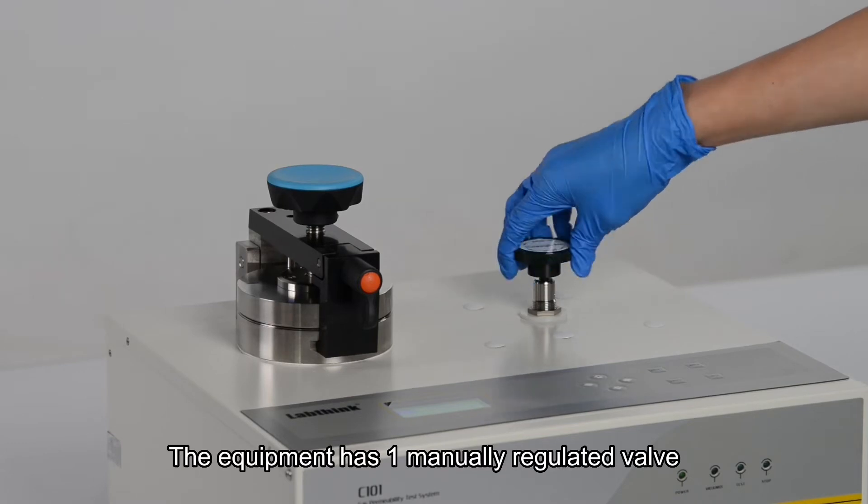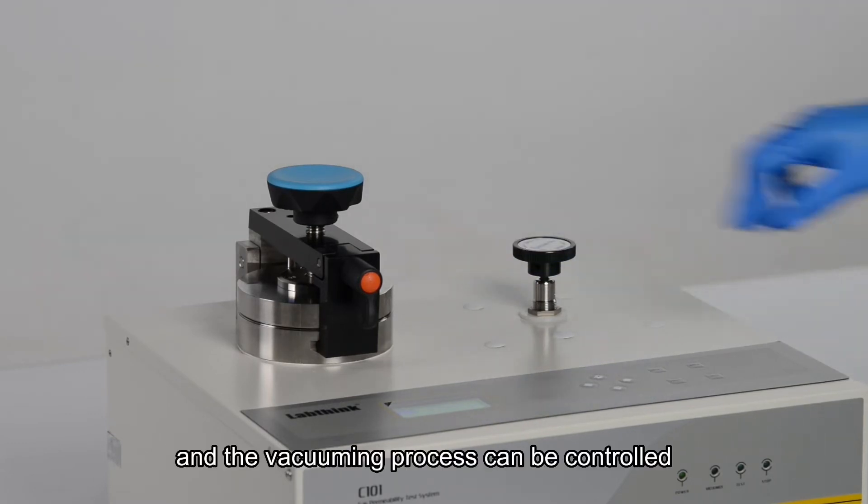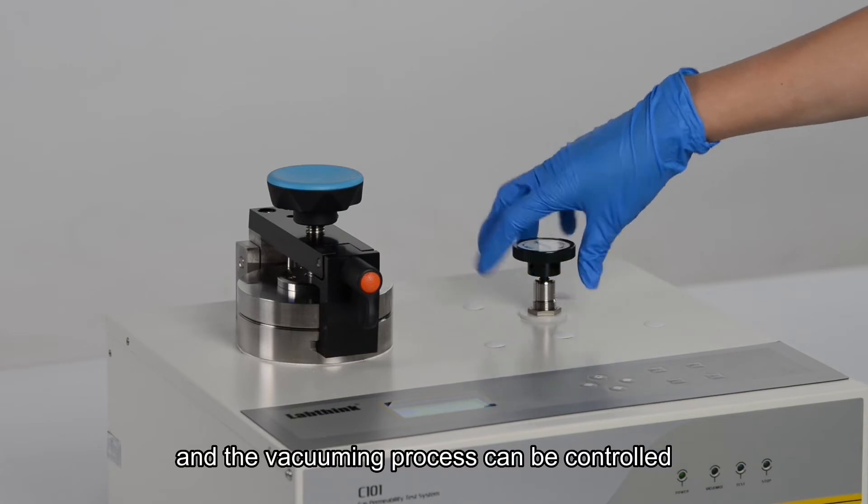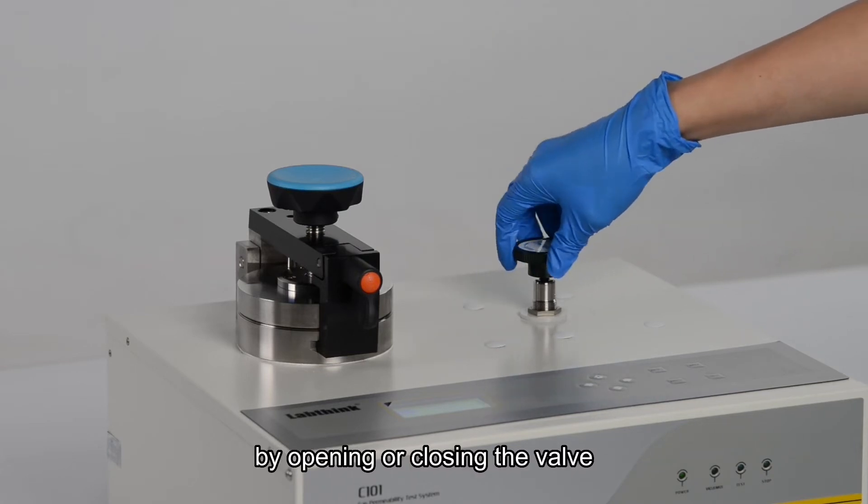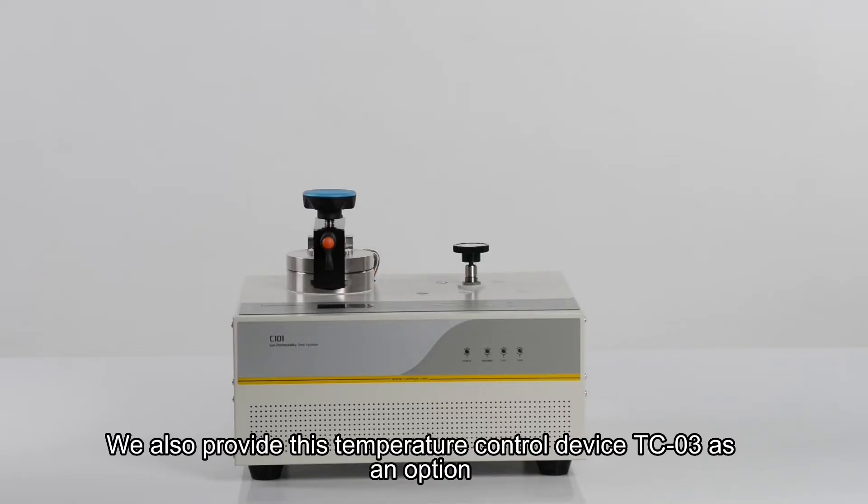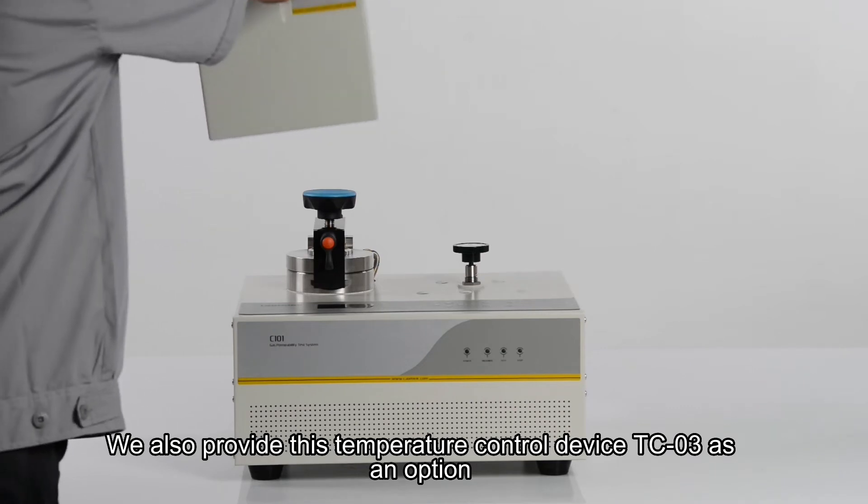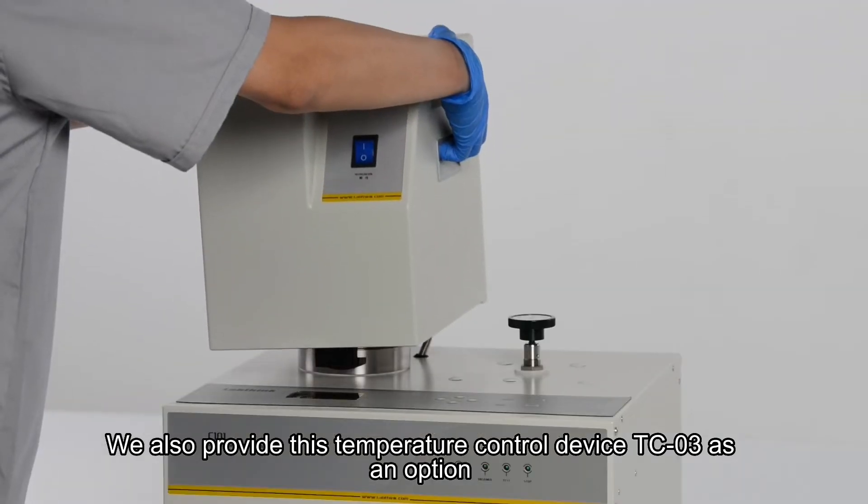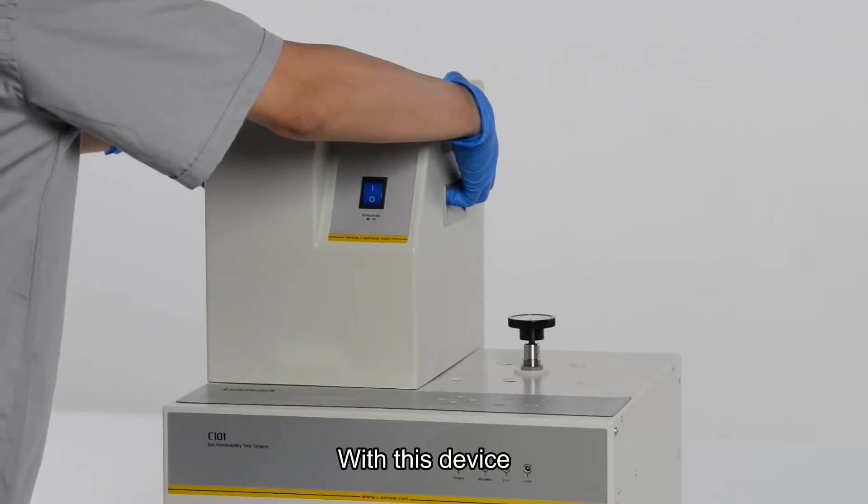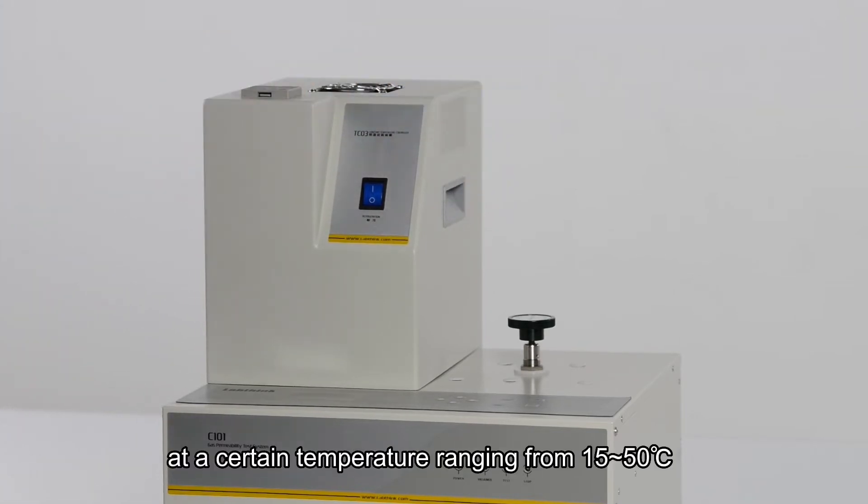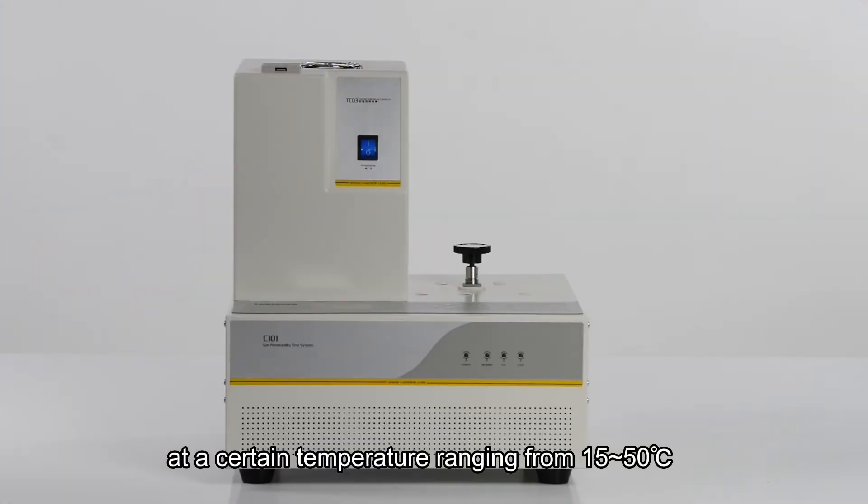The equipment has one manually regulated valve, and the vacuuming process can be controlled by opening or closing the valve. We also provide this temperature control device TC03 as an option. With this device, the test can be conducted at a certain temperature ranging from 15 to 50 Celsius degrees.